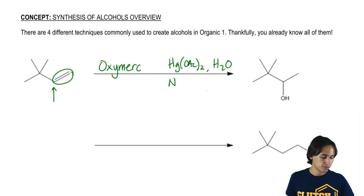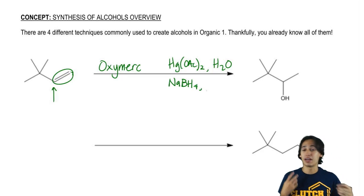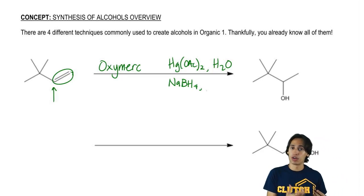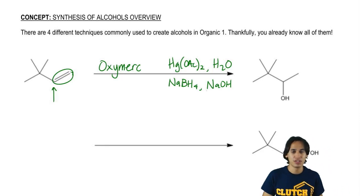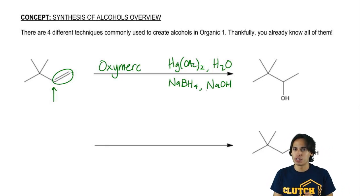Remember that the full name of this reaction is oxymercuration reduction. The reduction is completed by NaBH4, which later on we will learn is a reducing agent and a base, so NaOH. Those are the reagents. I know it looks like a lot, but this is one of the ways that you can add alcohol to a double bond.